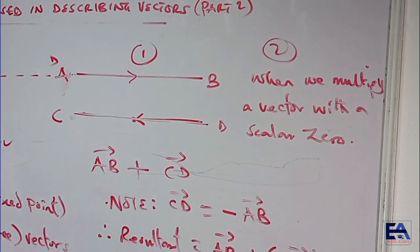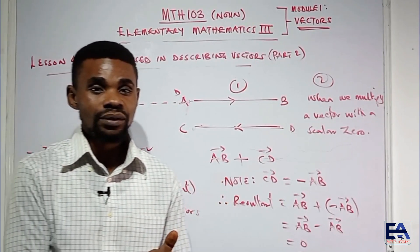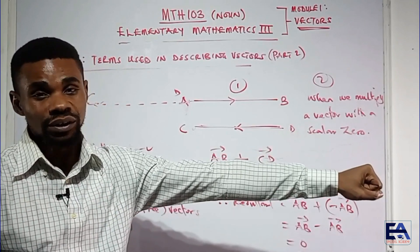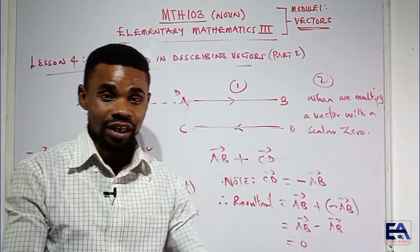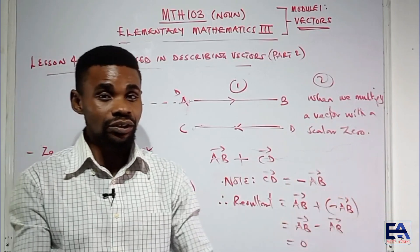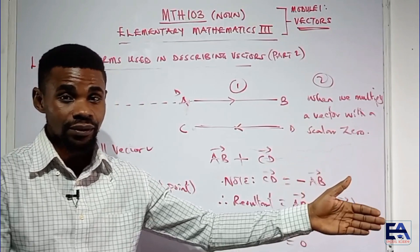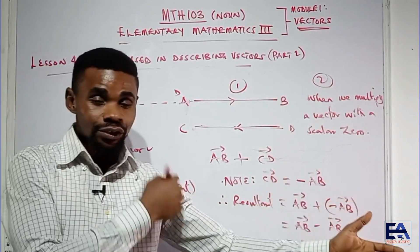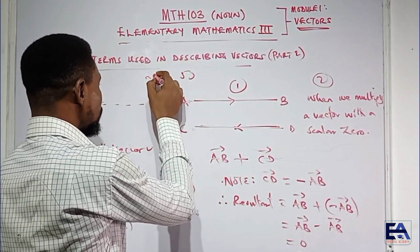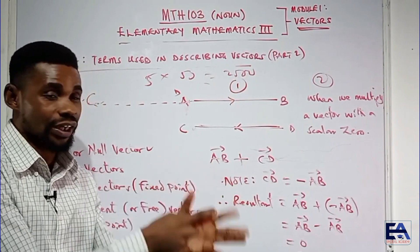Scalar zero means an ordinary number zero, not a vector. We'll soon get to the point where we realize there is something called scalar multiplication of vectors. For instance, if I'm applying a force of 50 newtons in a direction, I can multiply my force five times to get a greater amount. Five here is not a vector — it is just a scalar multiplying the vector. Mathematics allows us to multiply a vector by a scalar.